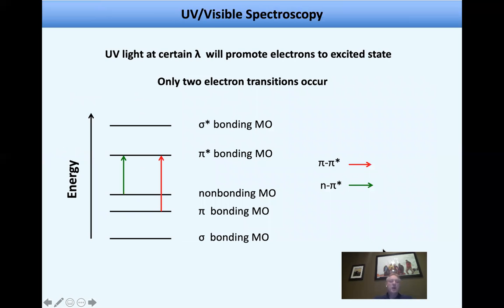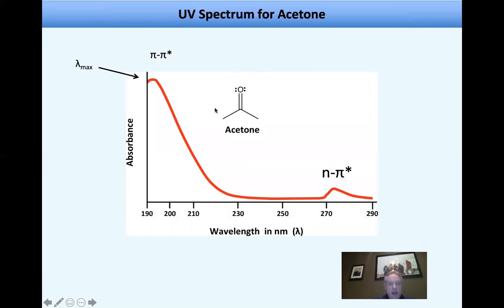So we move over to UV or visible spectroscopy. And we know that UV light at a certain wavelength will actually excite electrons. And only two electrons occur in UV visible spectroscopy. What we have is a pi to pi star. So this is an anti-bonding molecular orbital. And over here, we have a non-bonding to actual pi star. And so one of the things that's interesting about this is that UV visible only works for molecules that have pi electrons. So over here, we see acetone, a pretty simple molecule here. And what you can see then is that you have a pi to pi star. This is the lambda max. This is where you get the most absorbance. Then as you come down over here, you get a small little peak around 270-ish, that is n to pi star. So in order for you to get UV spectral data, the molecule must have pi electrons.